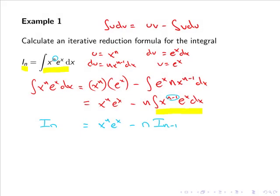In the last video we determined that an iterative reduction formula for the integral iₙ, which equals the integral of xⁿeˣ dx, is given by iₙ = xⁿeˣ - n·iₙ₋₁.